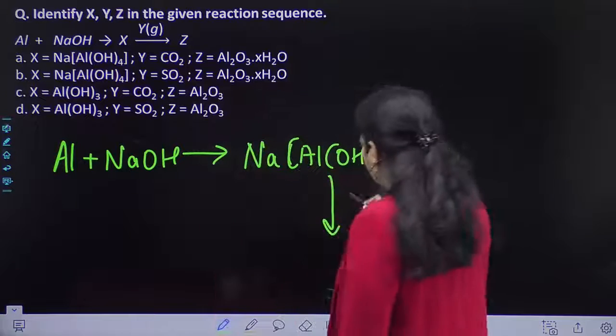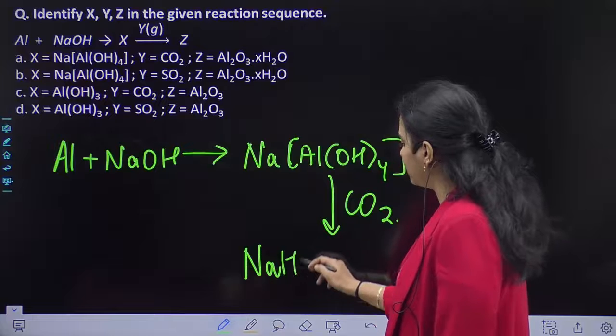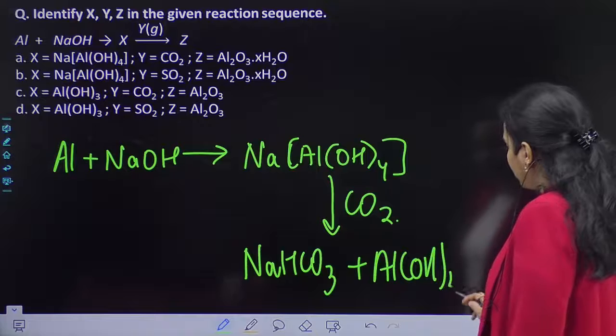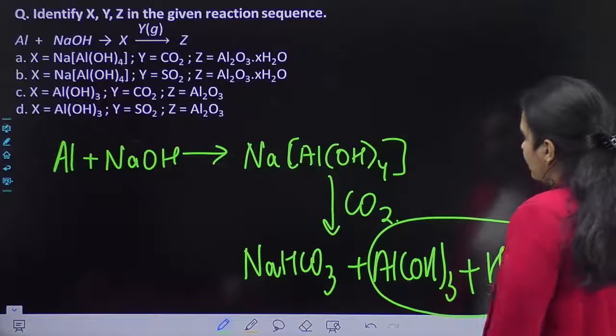Aur phir aap isay jab CO2 se pass karte hai, so then it will make NaHCO3 plus Aluminium hydroxide and H2O. So iska combination jo hai,